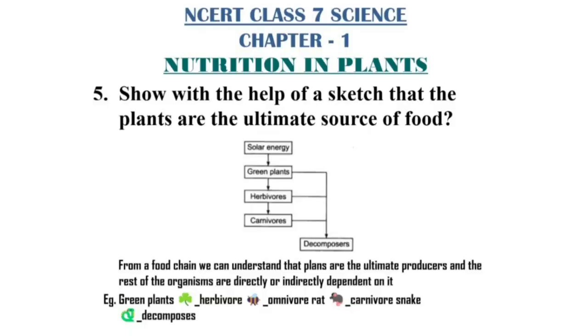We're at the final question of the question answers — the fifth one: show with the help of a sketch that plants are the ultimate source of food. From the diagram we can understand that green plants, with the help of solar energy, are the sole producers of food. Green plants are eaten by herbivores, and herbivores by carnivores, and then all of them decompose to germinate more plants. From this food chain, we can see that plants are the ultimate producers and all other organisms are directly or indirectly dependent on them.